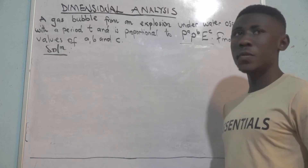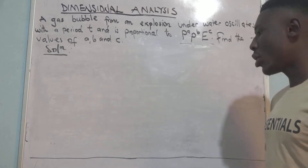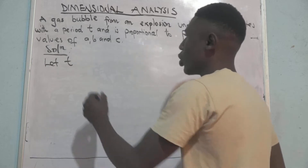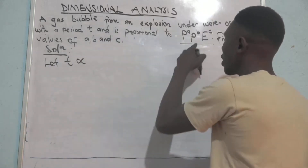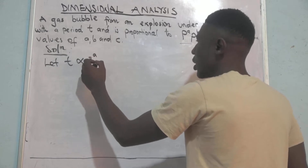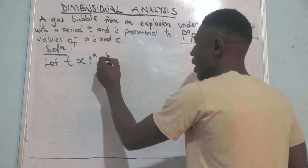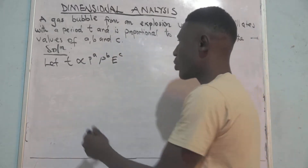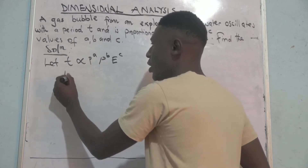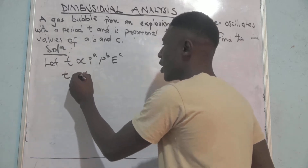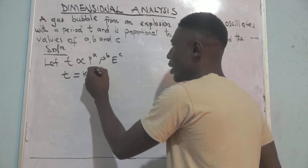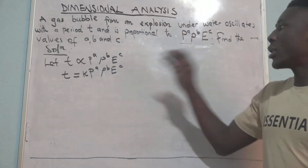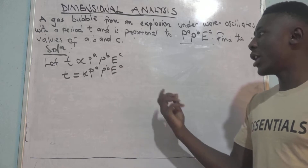To find the values of a, B, and C we are going to use dimensional analysis. We let time T be directly proportional to pressure to the power a, density to the power B, and energy to the power C. Changing from proportionality to equality, we have T equal to a constant K multiplied by pressure to the power a, density to the power B, and energy to the power C.